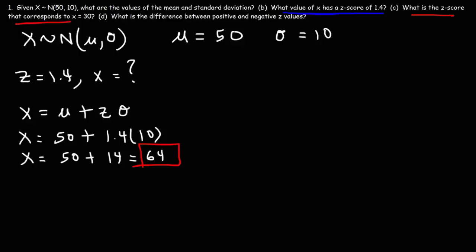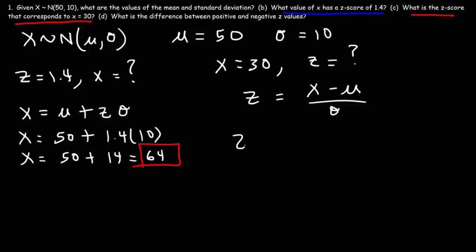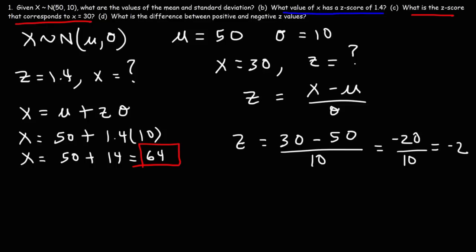Part C: what is the z-score that corresponds to x equals 30? We use the rearranged formula: z equals x minus the mean divided by the standard deviation. So that's 30 minus 50, which is negative 20, divided by 10, giving a z-score of negative 2.